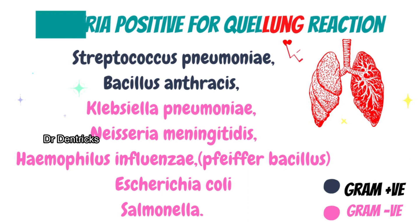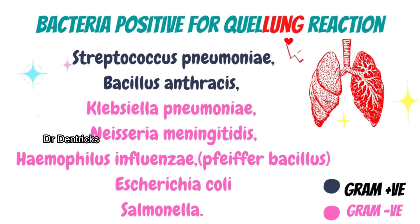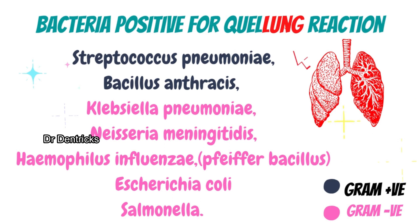The organisms positive for Quellung's reaction include gram-positive bacteria like Streptococcus pneumoniae, Bacillus anthracis (causing anthrax), gram-negative Klebsiella pneumoniae, Neisseria meningitidis, Haemophilus influenzae (also known as Pfeiffer bacillus), E. coli, and Salmonella. As a memory tip, the word 'lung' in Quellung indicates that bacteria causing lung infections like pneumonia are positive for this reaction.